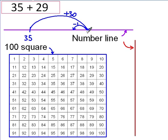35, add 30, 65, take away one, 64. There we go. Answer's 64.